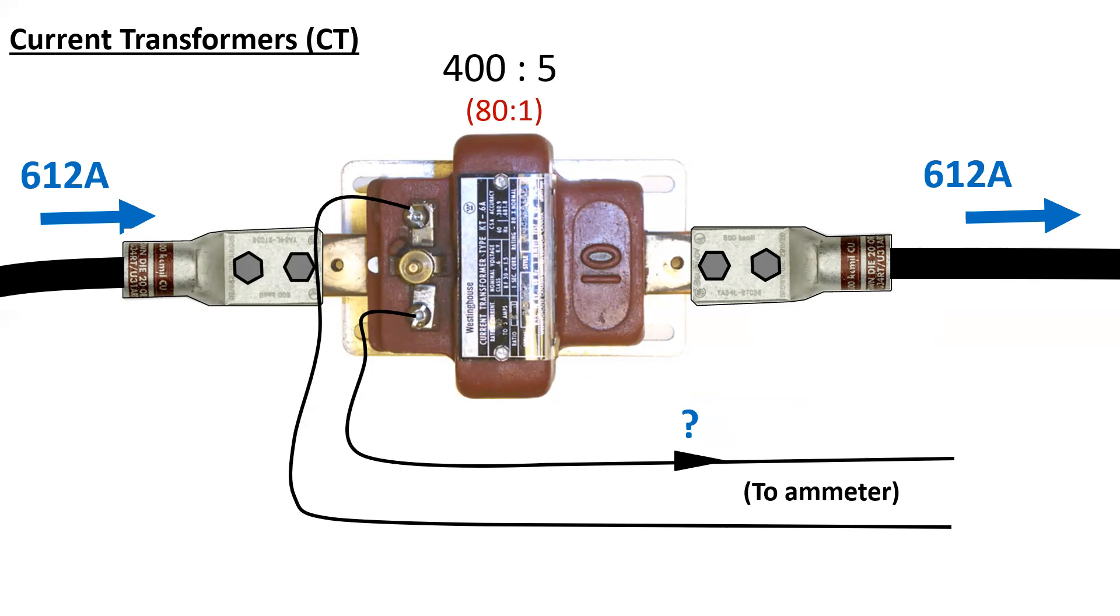Let's say I had 612 amps instead, 612 amps flowing through, same CT, 80 to 1. How many amps would be flowing on the secondary to the ammeter? Well, again, we would take 612, divide it by 80, and we'd end up with 7.65 amps.